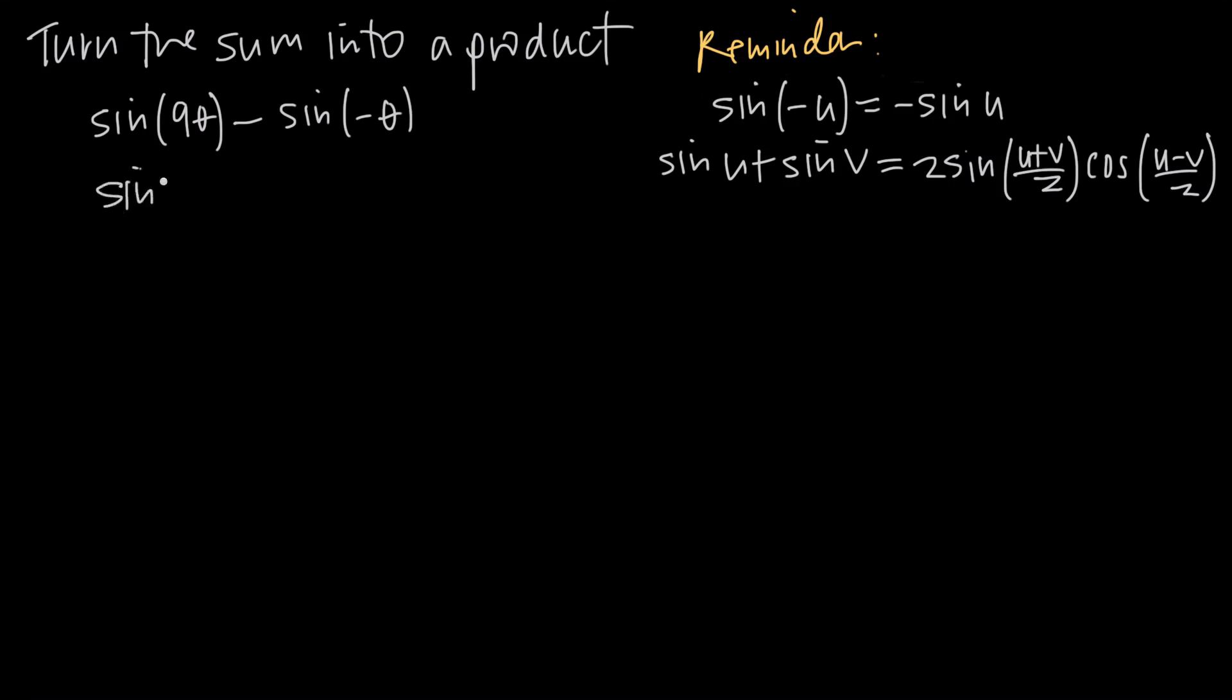So this is going to become, first and foremost, sine of 9θ minus, we'll pull the negative sign out in front, and this changes to negative sine of just regular positive θ. Of course, that's going to allow us to cancel these negative signs. They'll become a positive sign. So we end up with sine of 9θ plus sine of θ.